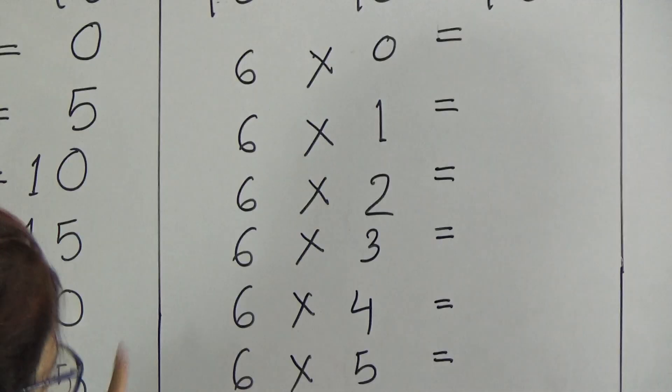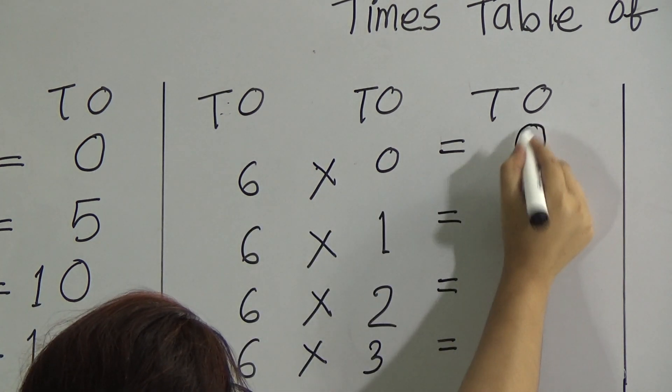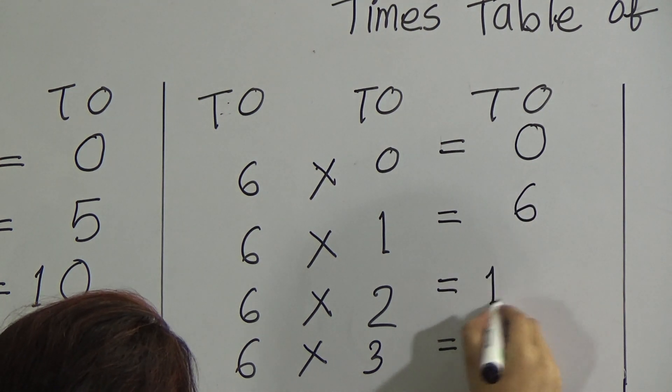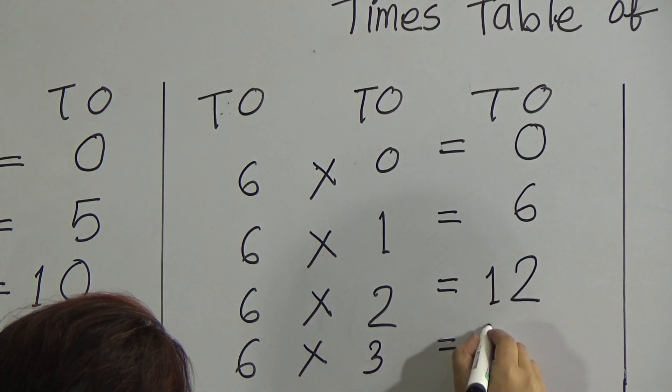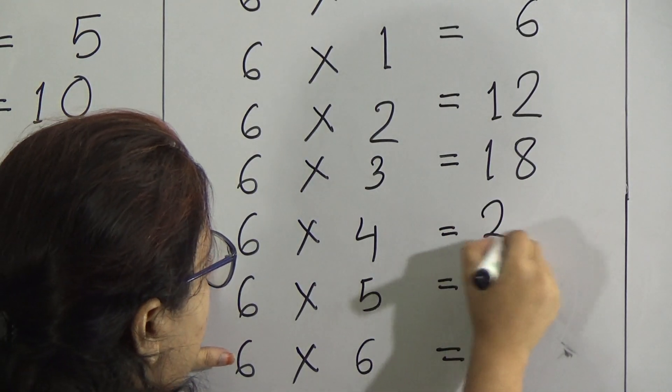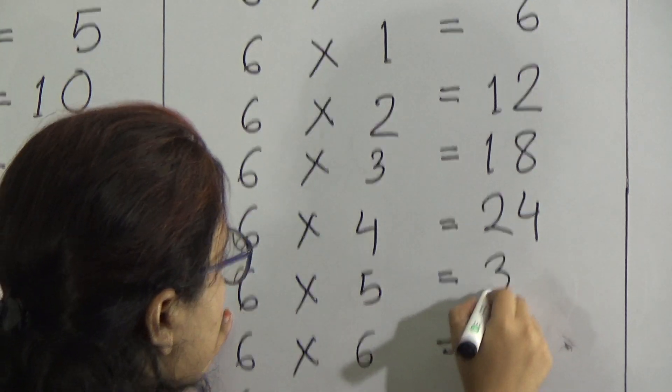Now let's move on. Second times table. Times table of 6. 6 times 0 is 0. 6 times 1 is 6. 6 times 2 is 12. 6 times 3 is 18. 6 times 4 is 24. 6 times 5 is 30.